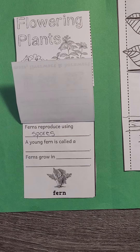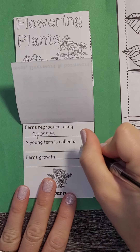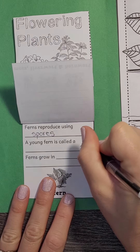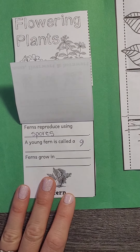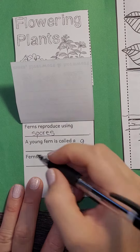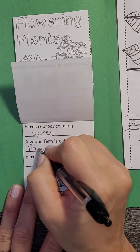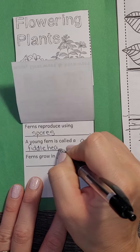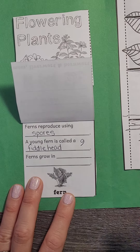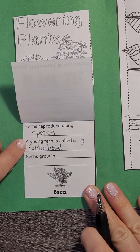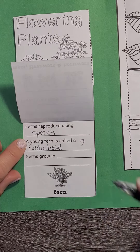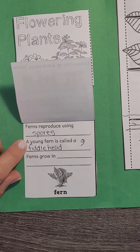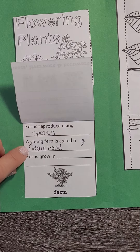Now when that fern starts to grow, it's all curled up. I'm going to draw a little picture here of it all curled up, and it is called a fiddlehead. This is an answer to one of your questions today — a young fern is called a fiddlehead.